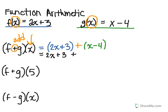It's a matter of combining like terms. So 2x plus x is 3x, and 3 plus negative 4 or 3 minus 4 would be negative 1. So what we end up with is a new function from adding the first two functions together.